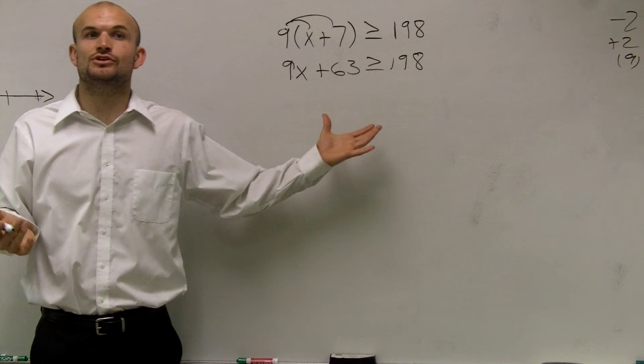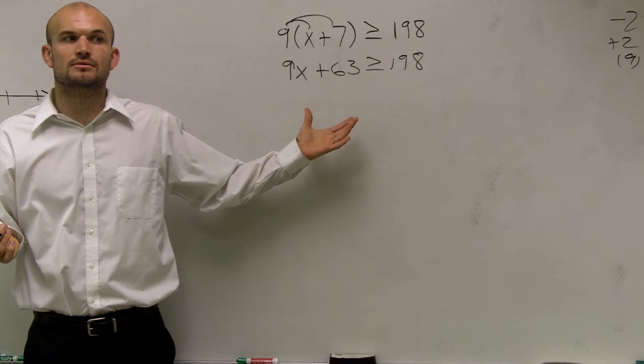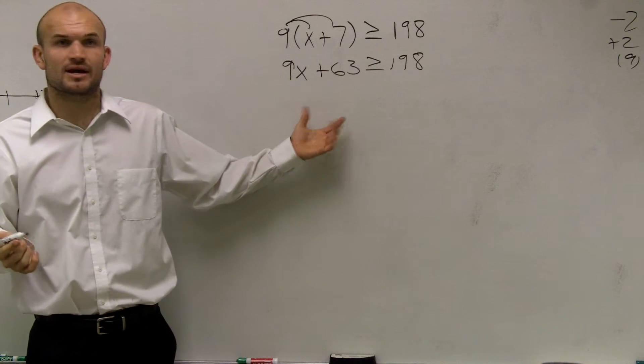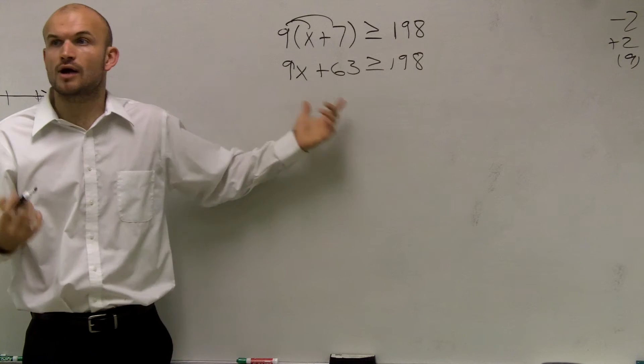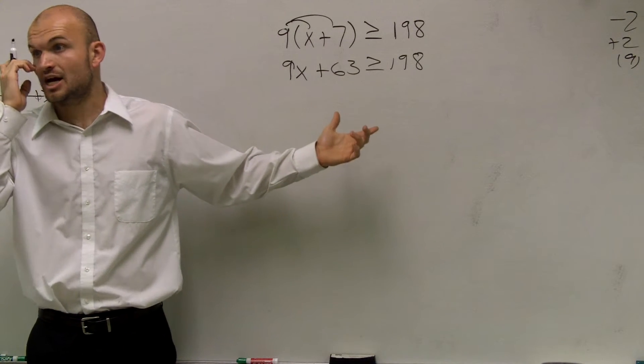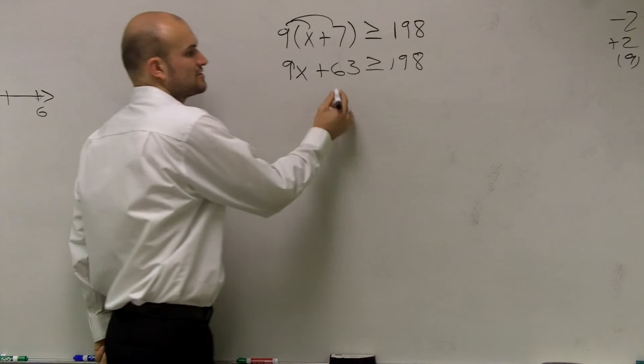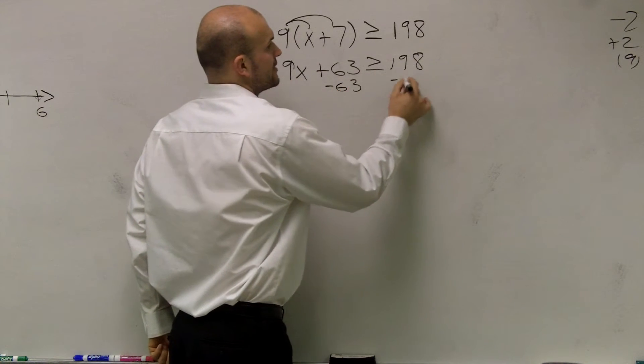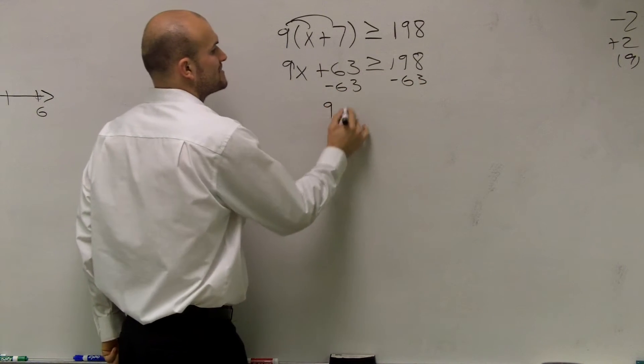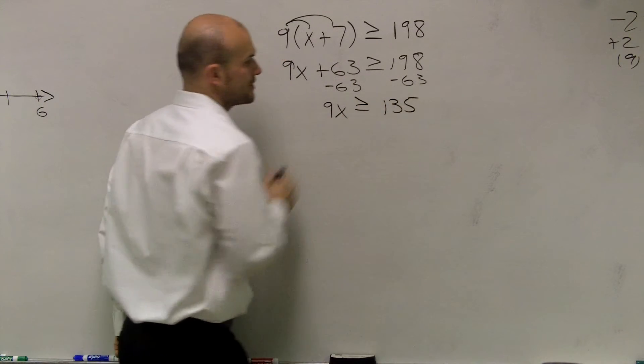Now we just need to use our two-step problems. So you look at your variable and say, what's happening to my variable that I need to undo? I'm adding a 63, so we always undo addition and subtraction first. So I subtract 63 on both sides. I obtain 9x is greater than or equal to 135.